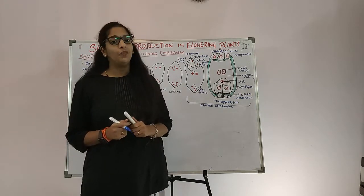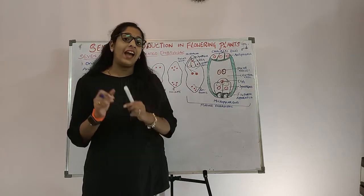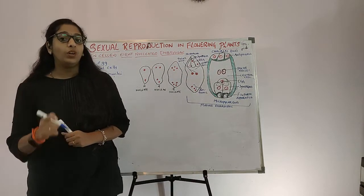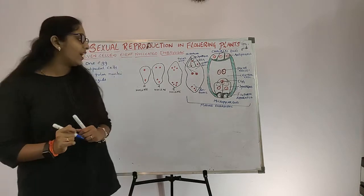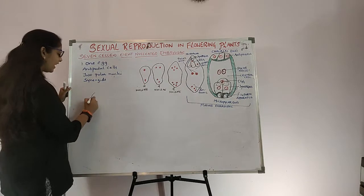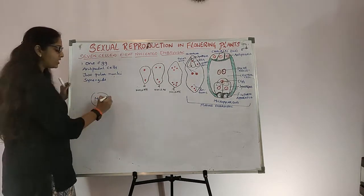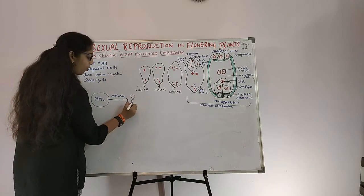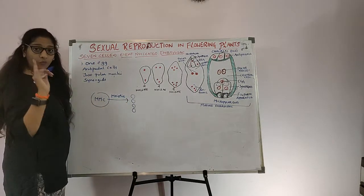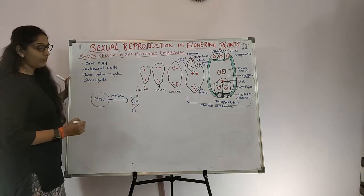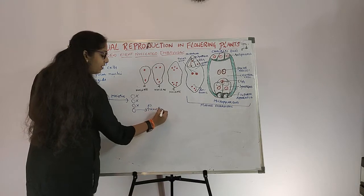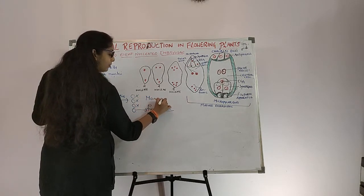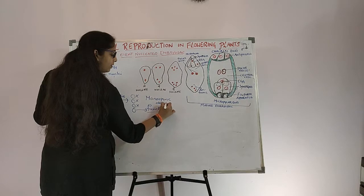The embryo sac is a female gametophyte. As explained in the last class, in the majority of flowering plants only 1 megaspore is functional. The megaspore mother cell undergoes meiosis and forms 4 megaspores, but 3 degenerate and only 1 functional megaspore remains. This is known as monosporic development.